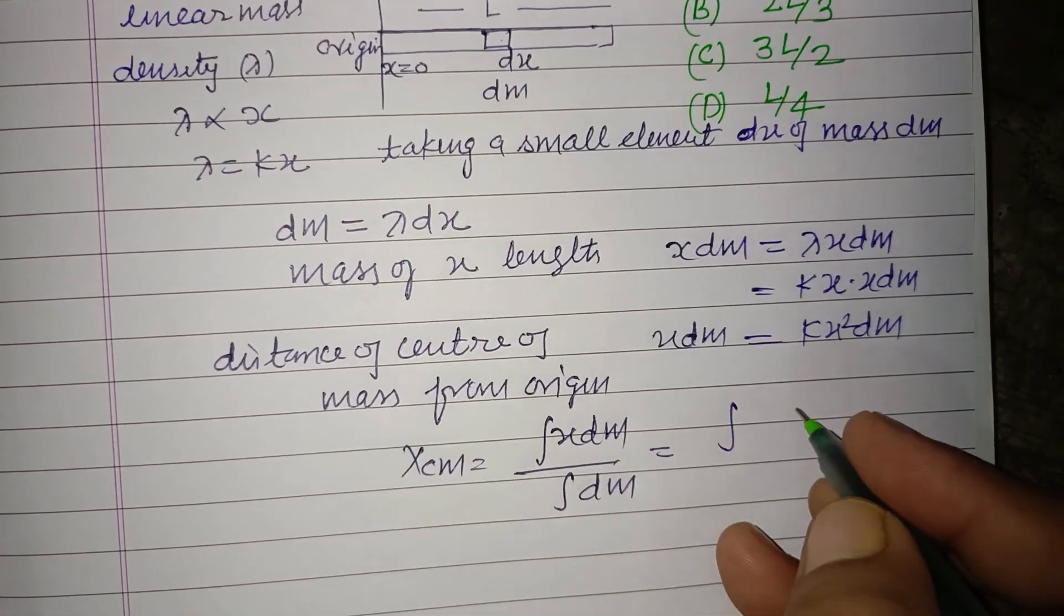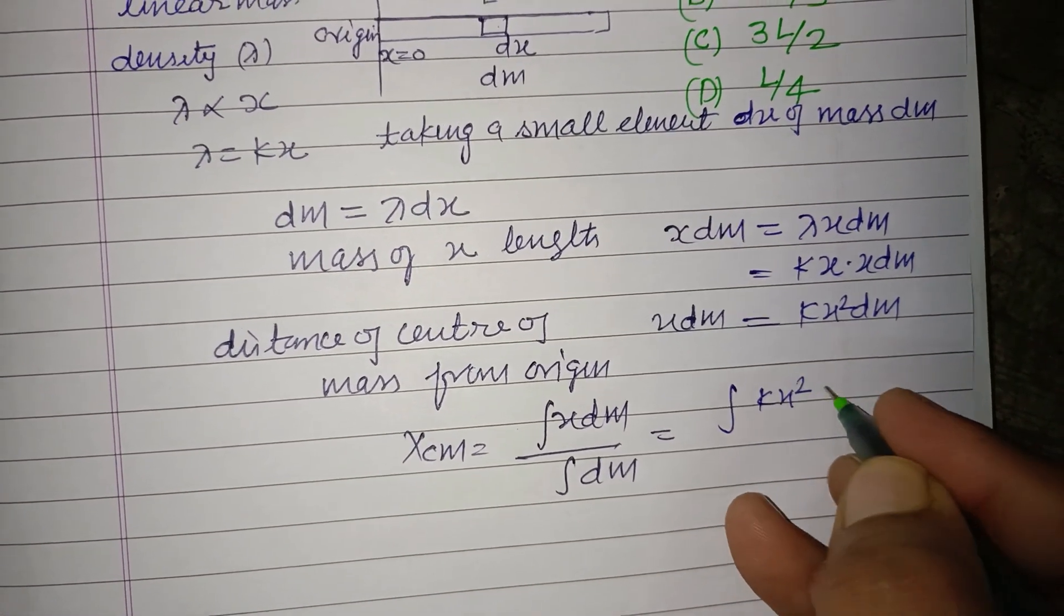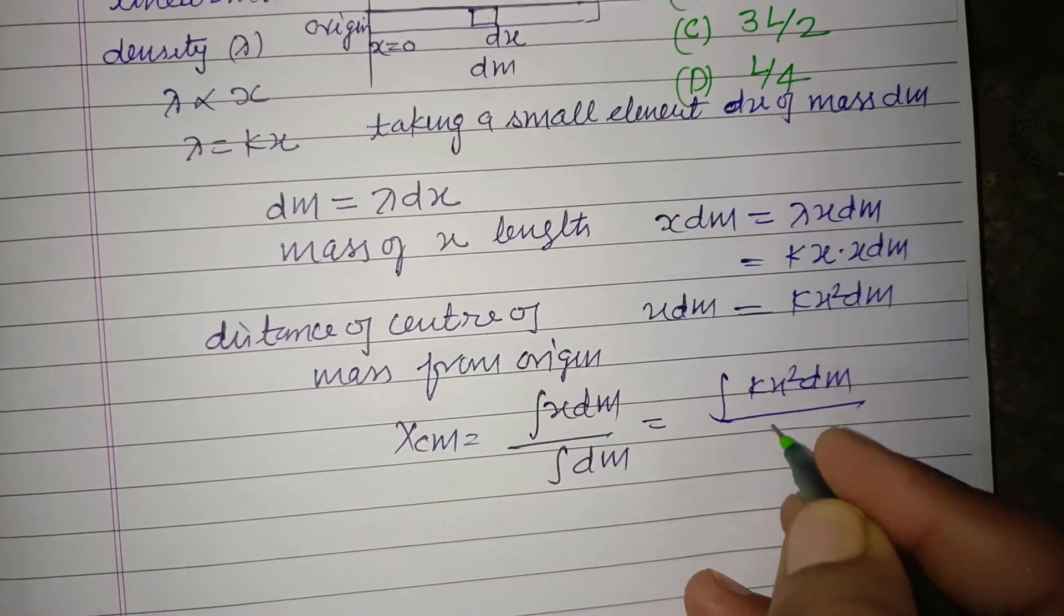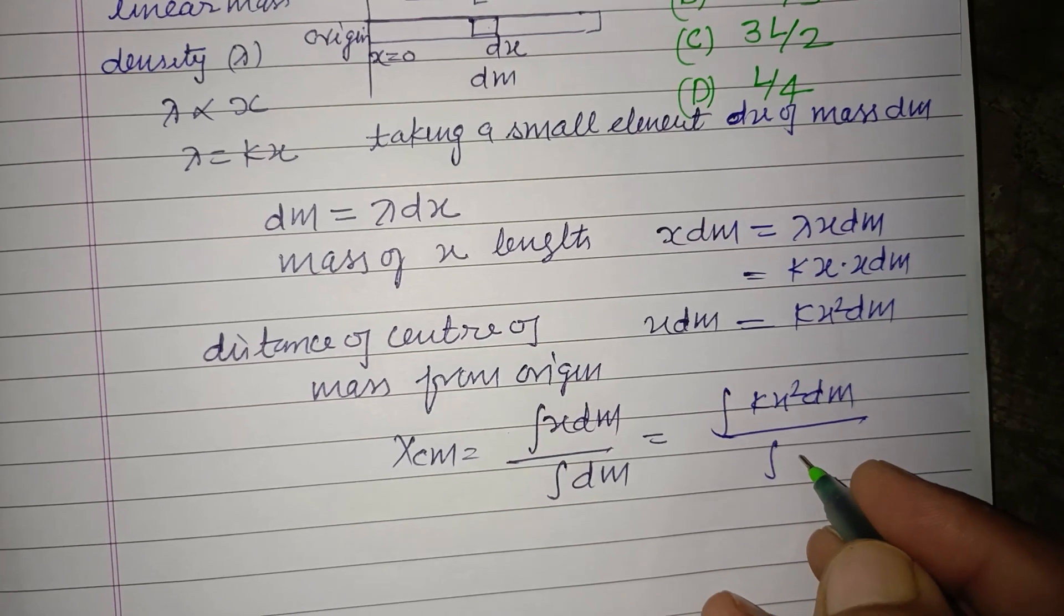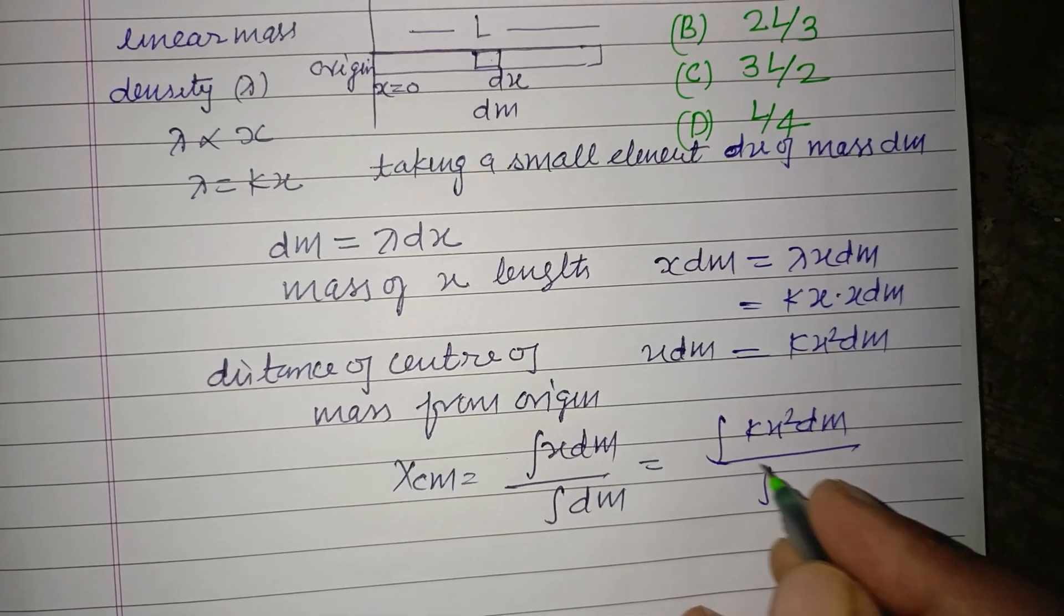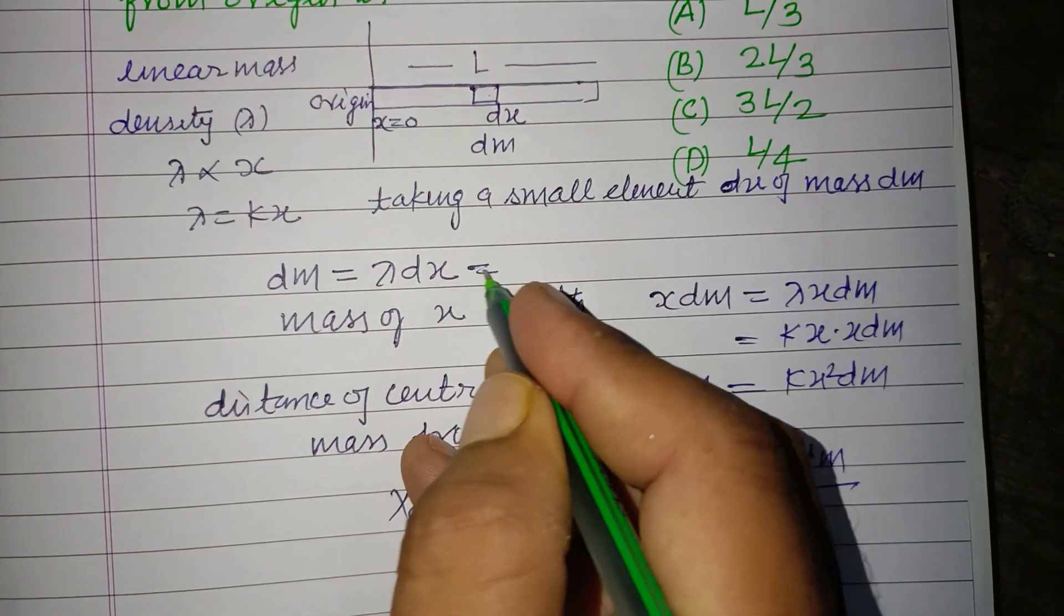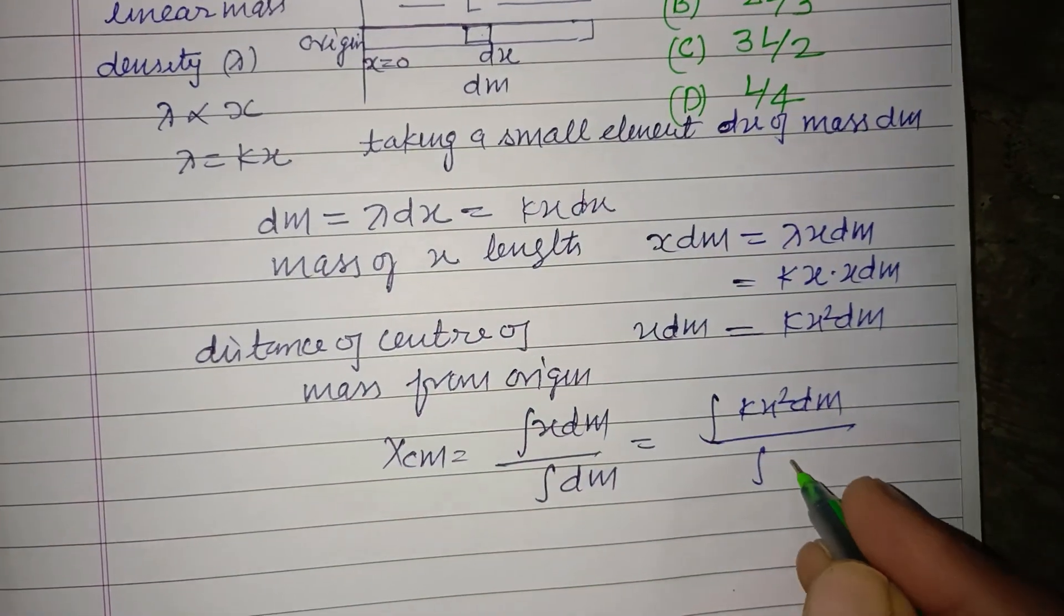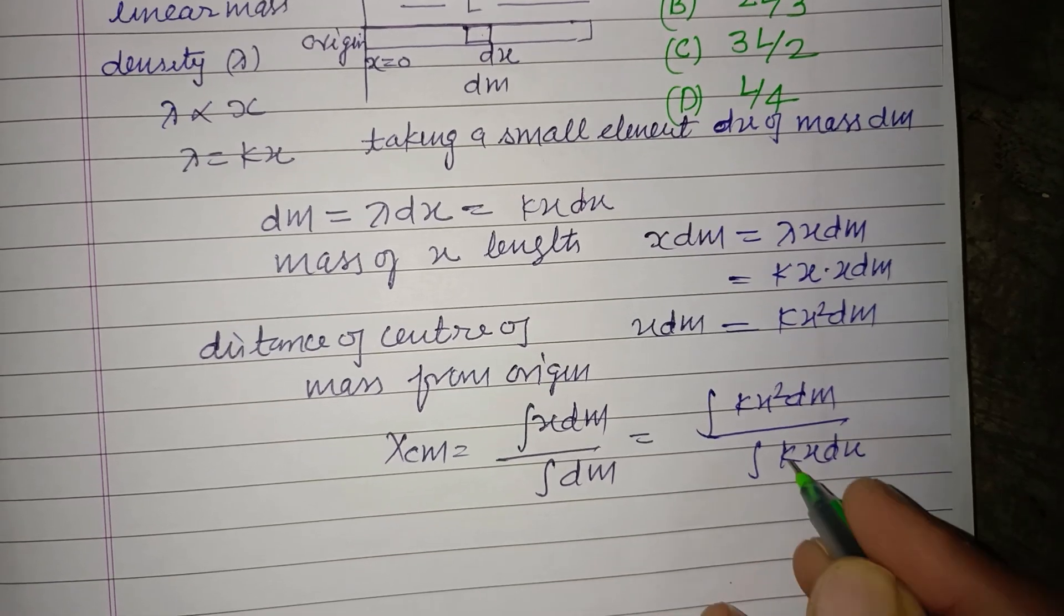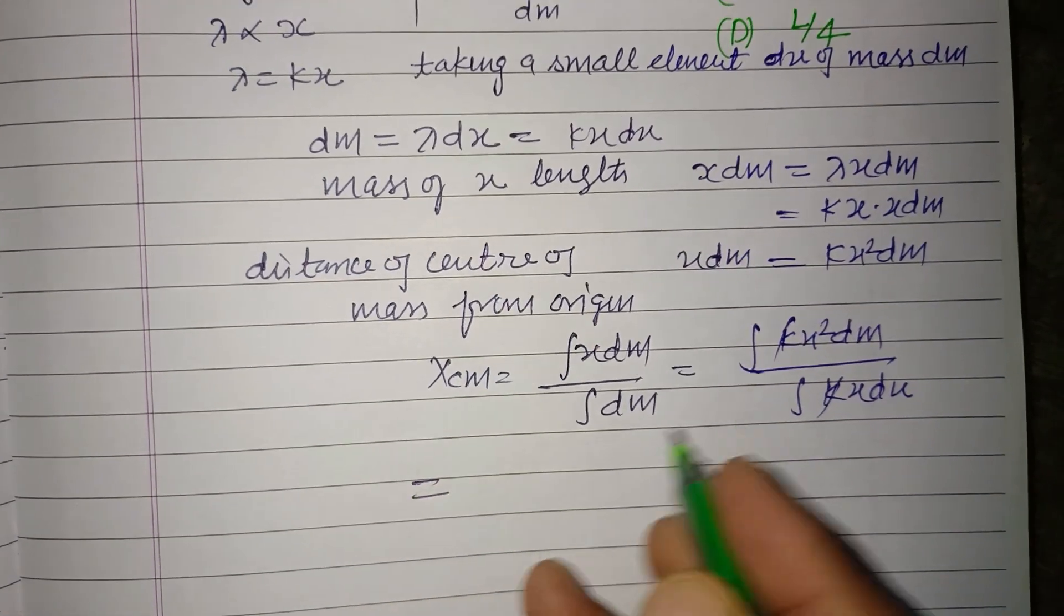Over dm is lambda dx, which is kx dx. kx dx. kk cancel. Integrating.